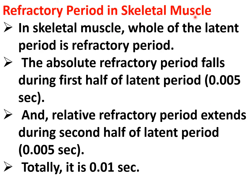Refractory period in skeletal muscle: in skeletal muscle, the whole of the latent period is the refractory period. The absolute refractory period falls during the first half of the latent period with a duration of 0.005 second. The relative refractory period extends during the second half of the latent period with a duration of 0.005 second. So totally it is about 0.01 second.